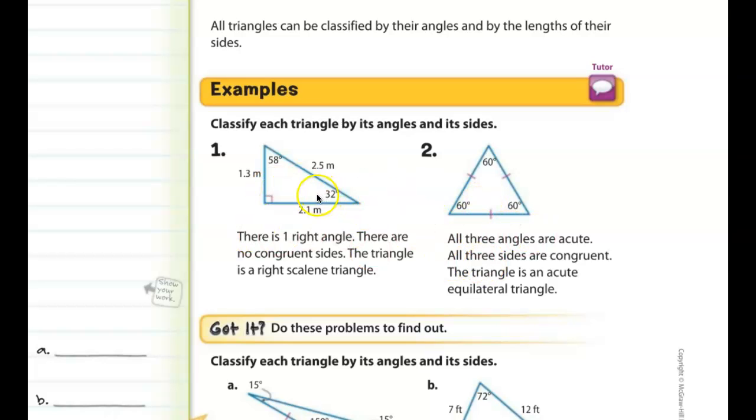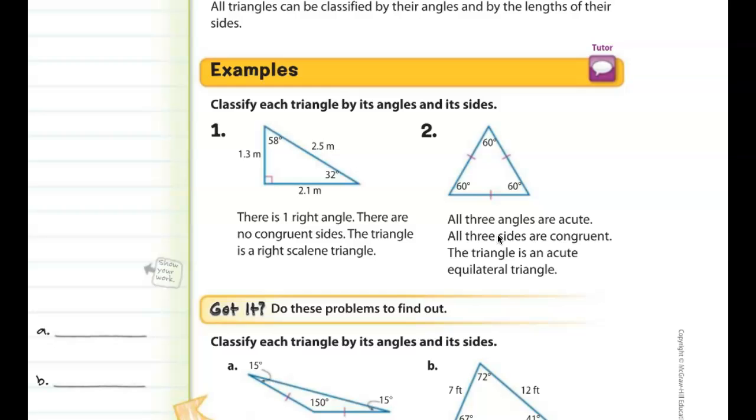There are two more examples of how to classify. This triangle has a right angle, so it's a right triangle. And also, all three sides are different lengths, so it's going to be scalene as well. This particular triangle, all three angles are equivalent, all three sides are equivalent, and so that's going to be an equilateral triangle. But if you'll notice that all of the angles are also less than 90 degrees, so equilateral triangles are always also acute triangles, but equilateral triangles always have the measure of 60 degrees because 180 divided by 3 is going to be 60.